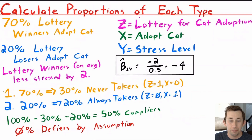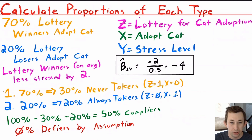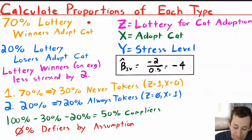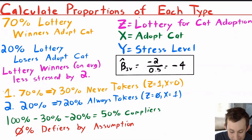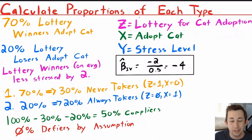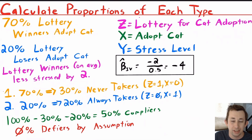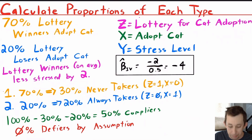How might you estimate the proportion of people in the population that are always takers, compliers, or never takers? First, assume no defiers — a basic IV assumption. Suppose 70% of lottery winners adopt a cat, and 20% of lottery losers find a way to adopt anyway. Also suppose lottery winners are on average less stressed than non-winners by 2 points. We need to find the compliance rate to compute the IV estimate.